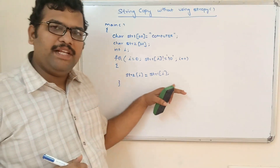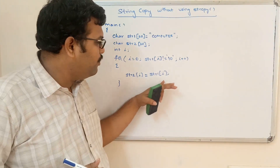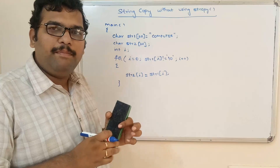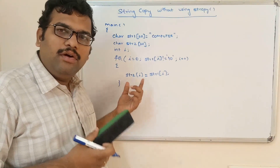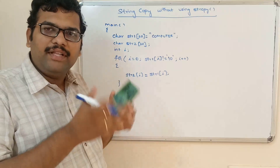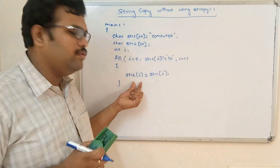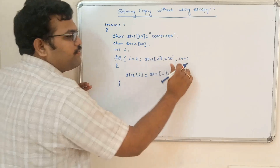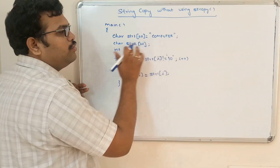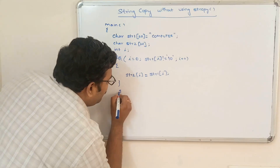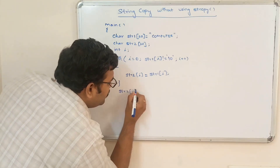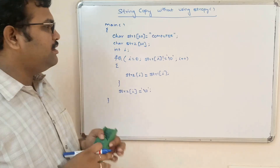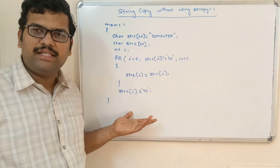After copying all the characters from str1 to str2, at the end we must include '\0', because when printing str2, the compiler will print everything until it reaches '\0'. So after the loop completes, we add: str2[i] = '\0'. This is a simple program to copy the content of one string to another string.